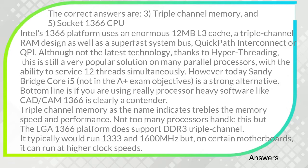However, today Sandy Bridge Core i5 — not in the A+ exam objectives — is a strong alternative. Bottom line is, if you are using really processor-heavy software like CAD/CAM, 1366 is clearly a contender. Triple-channel memory, as the name indicates, trebles the memory speed and performance. The LGA 1366 platform supports DDR3 triple-channel, typically running at 1333 and 1600 MHz, but on certain motherboards it can run at higher clock speeds.